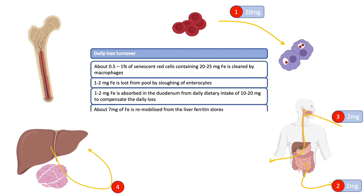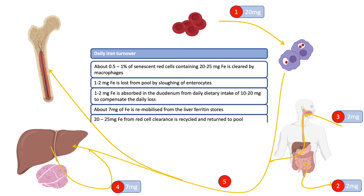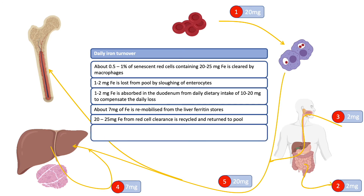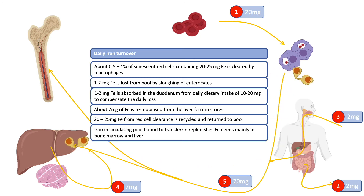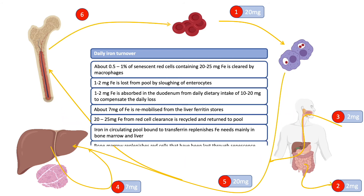About 7 mg of iron is re-mobilized daily from the liver ferritin stores, while 20 to 25 mg of iron is returned from red cell clearance into the pool to subsequently enter the bone marrow for erythropoiesis or the liver to be stored as ferritin. The iron in the circulating transferrin-bound pool replenishes needs mainly in the bone marrow for erythropoiesis and in the liver for storage. The bone marrow then replenishes red cells that have been lost through senescence or splenic destruction.